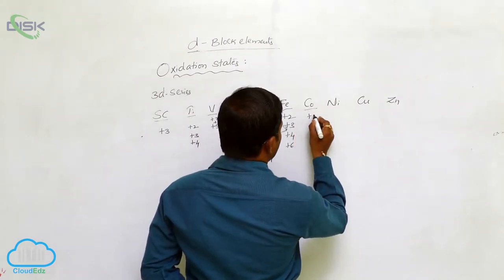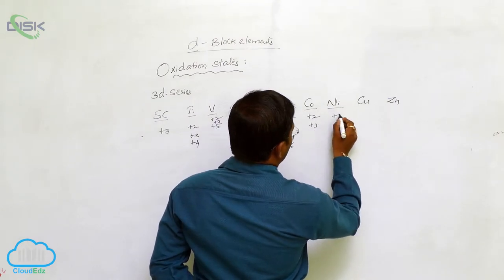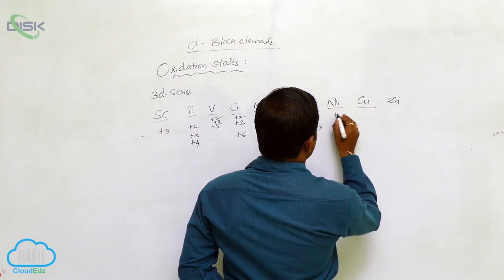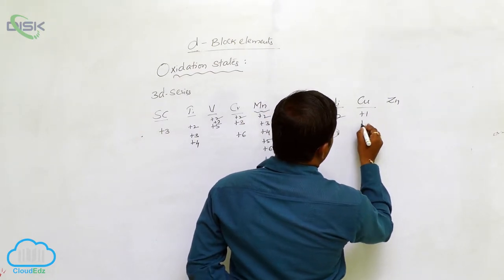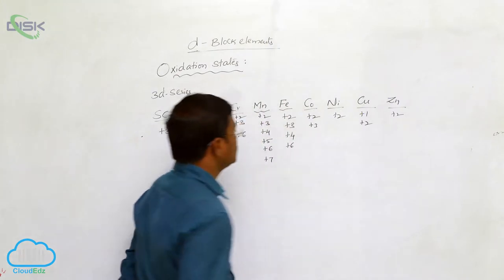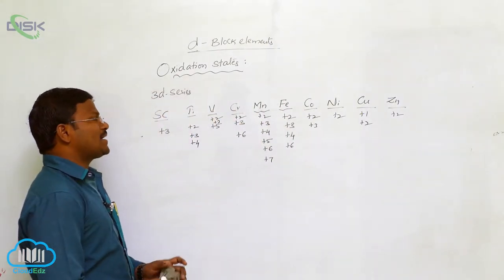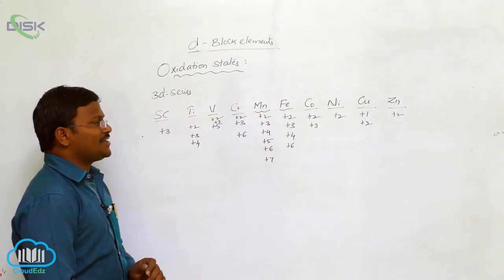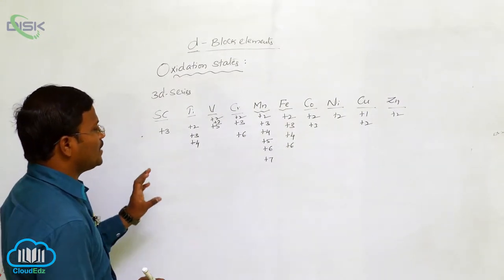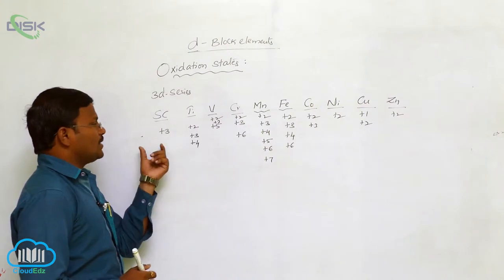For cobalt, +2 and +3 are the common oxidation states. For nickel, +2 and +3. For copper, +1 and +2. For zinc, +2. These are the expected oxidation states exhibited by D-block elements or transition elements, especially the 3D series elements.